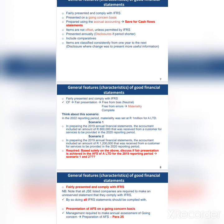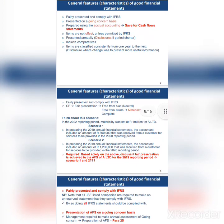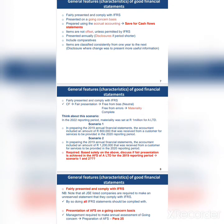Financial statements must be free from bias, free from errors, and must be complete. Consider this scenario: in the 2022 reporting period, materiality was set at 1 million for Company A. Scenario one — in preparation of the 2019 annual financial statements, the accountant included an amount of 800,000 received from a customer for a service to be provided in the 2020 reporting period. Scenario two — the accountant included 1.2 million received for the same purpose.